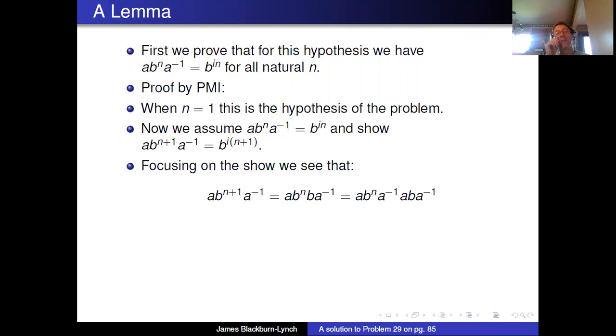So let's start by focusing on the show. We have our show, we don't assume our show, we just start with the left side, ab^(n+1) a^(-1). Then we do a normal trick, we change b^(n+1) into b^n and b. And then we do another standard trick, we throw in a^(-1)a in the middle of that. Of course that is e, so that is legitimate.